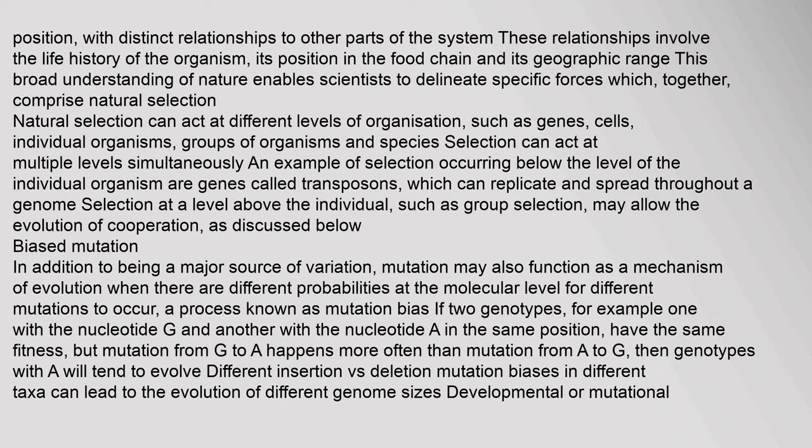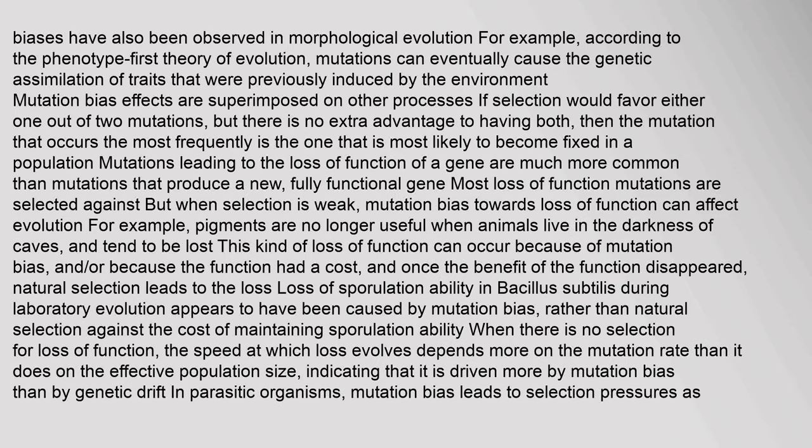Biased Mutation: In addition to being a major source of variation, mutation may also function as a mechanism of evolution when there are different probabilities at the molecular level for different mutations to occur — a process known as mutation bias. If two genotypes, for example one with nucleotide G and another with nucleotide A in the same position, have the same fitness, but mutation from G to A happens more often than mutation from A to G, then genotypes with A will tend to evolve. Different insertion vs. deletion mutation biases in different taxa can lead to the evolution of different genome sizes. Developmental or mutational biases have also been observed in morphological evolution.